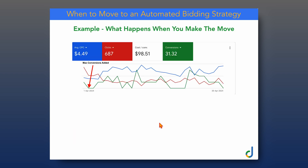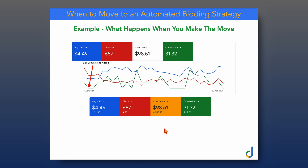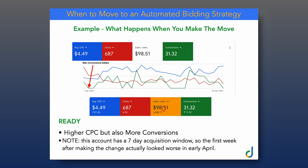Before we get into live accounts, I want to show you what happens when you make the move to maximize conversions or maximize conversion value bidding strategy. Looking at 30 days before versus 30 days after, you can see that CPC went up quite significantly — from the high $2 up to $4.50 — and they actually got fewer clicks. But the cost per conversion went down from $138 down to $98, and they nearly doubled the amount of conversions they got. That's what a maximize conversion bidding strategy can do when it's set right, as long as you've got the right account with enough data.